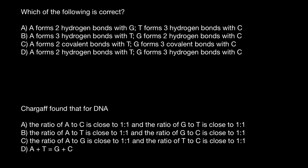Everything you have to know in order to answer this question is that in double-stranded DNA, adenine always pairs with thymine, and cytosine always pairs with guanine.